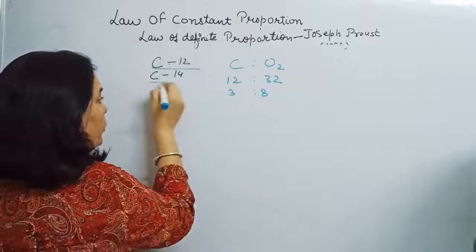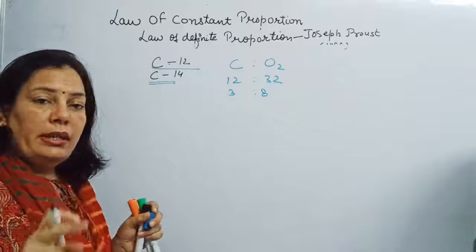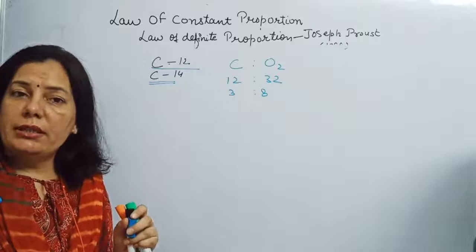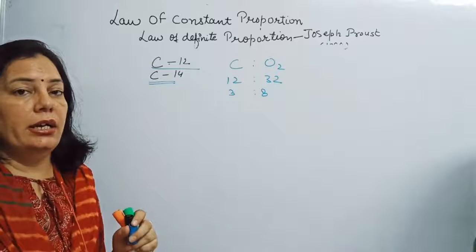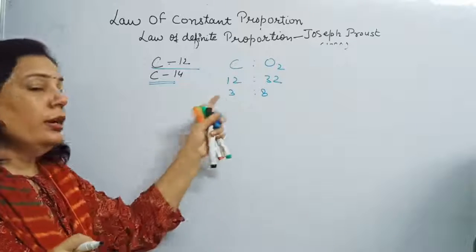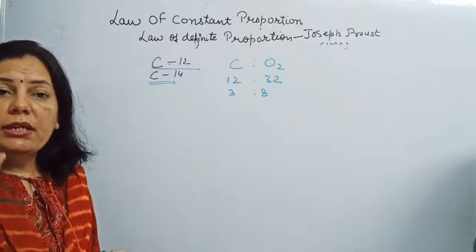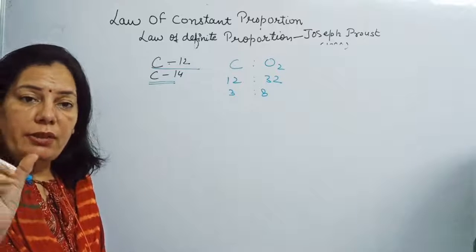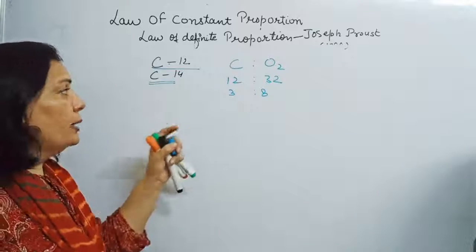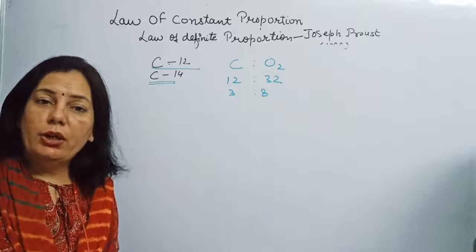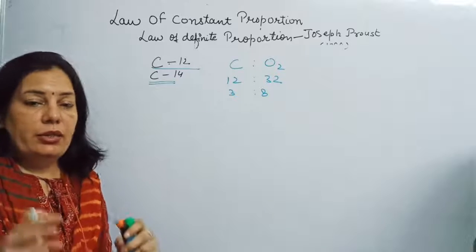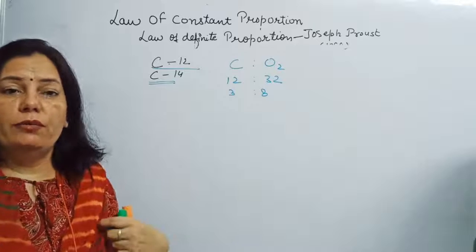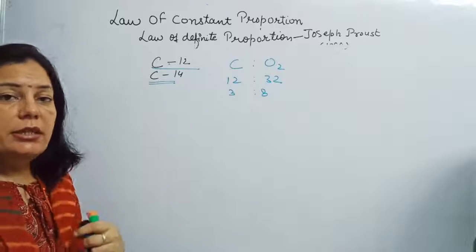But if C-14 carbon reacts with oxygen, the ratio changes. The mass of carbon is 14 units and oxygen remains 32 units, giving a ratio of 14:32, which equals 7:16. This means there is no constant or definite proportion between carbon and oxygen in carbon dioxide, so the ratio in carbon dioxide is not fixed.